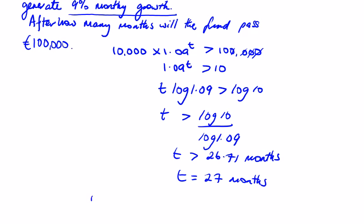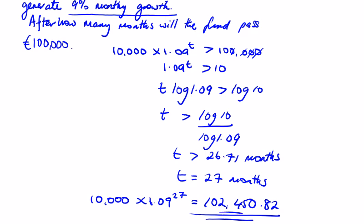So just check this: €10,000 by 1.09 to the power of 27 is going to give us €102,450.82. You can see it's just past €100,000. So dealing with logs, AER, a couple of simple topics - learn them off before moving on to the next video.